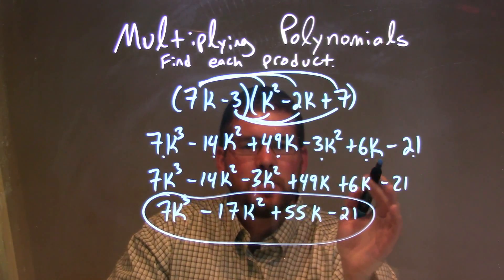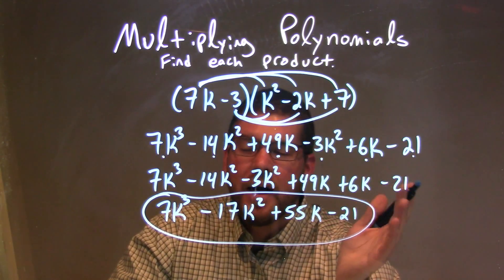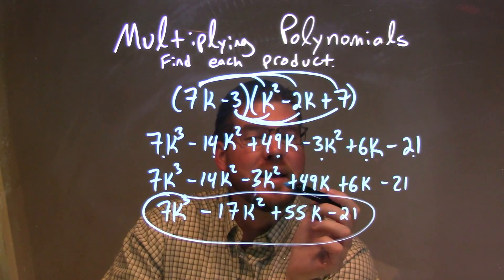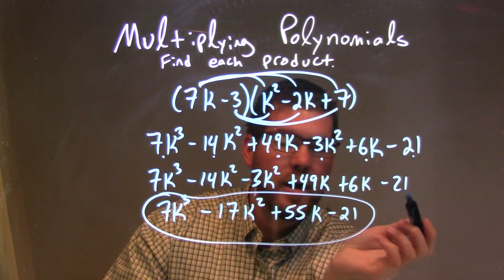We rearrange from there, all of our like terms together, highest degree first, giving us 7k to the third minus 14k squared minus 3k squared plus 49k plus 6k minus 21.